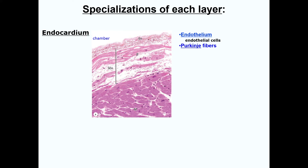Now let's dig a little bit deeper into the specializations of each layer. We'll start with the endocardium. It consists of endothelium that lines the chamber with a subendothelial connective tissue that contains some smooth muscle cells. In the subendocardial space reside the specialized muscle fibers known as Purkinje fibers, which we will discuss further in just a few minutes.